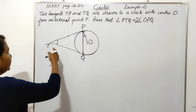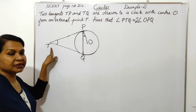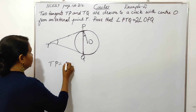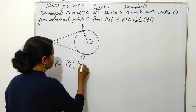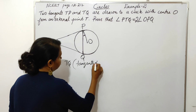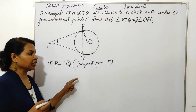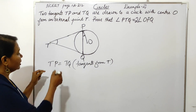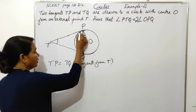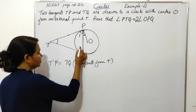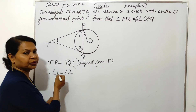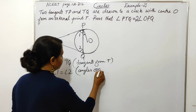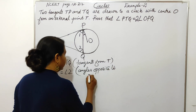Let's look at this concept. TP and TQ are tangents from an external point, so they are equal. TP equal to TQ. Reason: tangents from an external point to a circle are equal. This triangle has equal sides, so the opposite angles are equal. This angle is 1 and this angle is 2. Therefore, angle 1 equal to angle 2, as angles opposite equal sides.